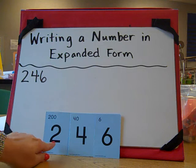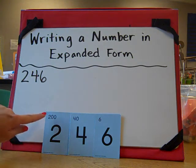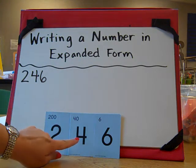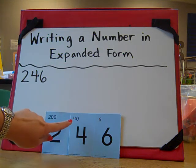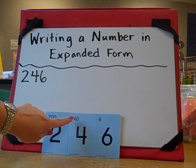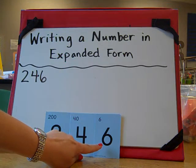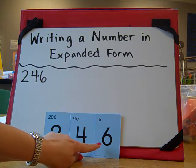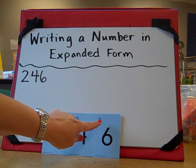We know that the 2 is in the hundreds place, so it equals 200. The 4 is in the tens place, so it equals 40. And the 6 is in the ones place, so it equals 6.